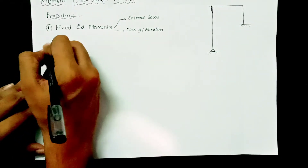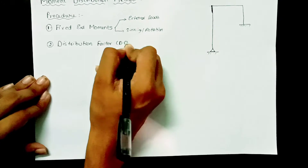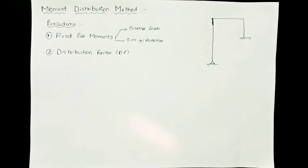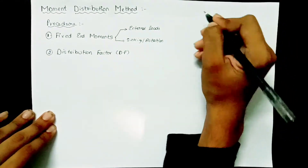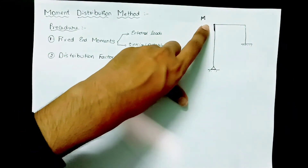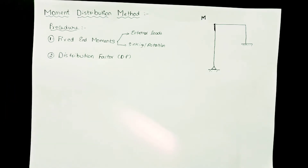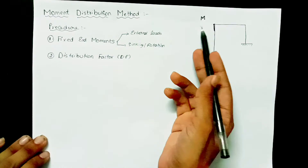The second step is to calculate the distribution factor (DF). The method is completely based on moment distribution. For example, at a joint with a certain moment M, that moment is distributed to all the members connected at that joint. If you have two members, the moment is shared between two; if three members, among three. This sharing is based on the distribution factor.